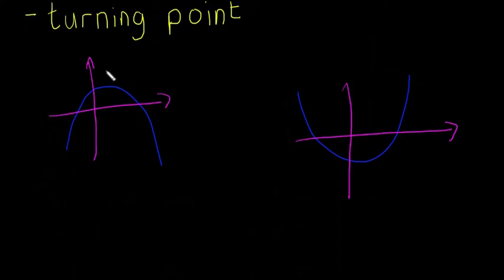The local maximum here is going to be this point. Okay, so it's where the curve is at a maximum. And the local minimum here is going to be here because that's at a minimum. Does that make sense?